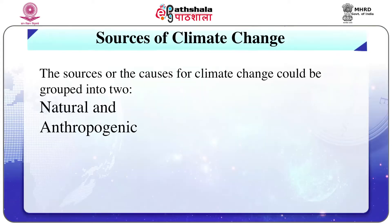Sources of climate change. Do you know that climate change has happened many times in Earth's history since its origin? This is because climate change in today's context is anthropogenic, or in simpler terms, created by human activities. Evidences suggest that earlier climate change occurred due to natural processes. The sources or causes for climate change could be grouped into two: first is natural, and second is anthropogenic.